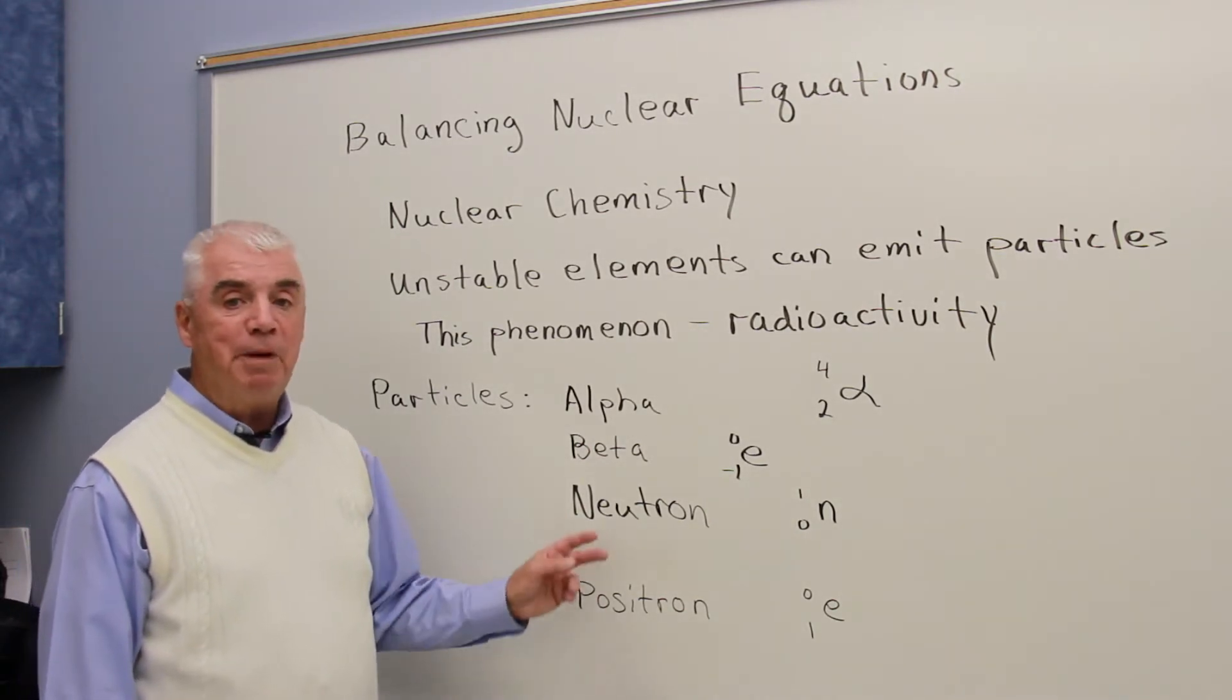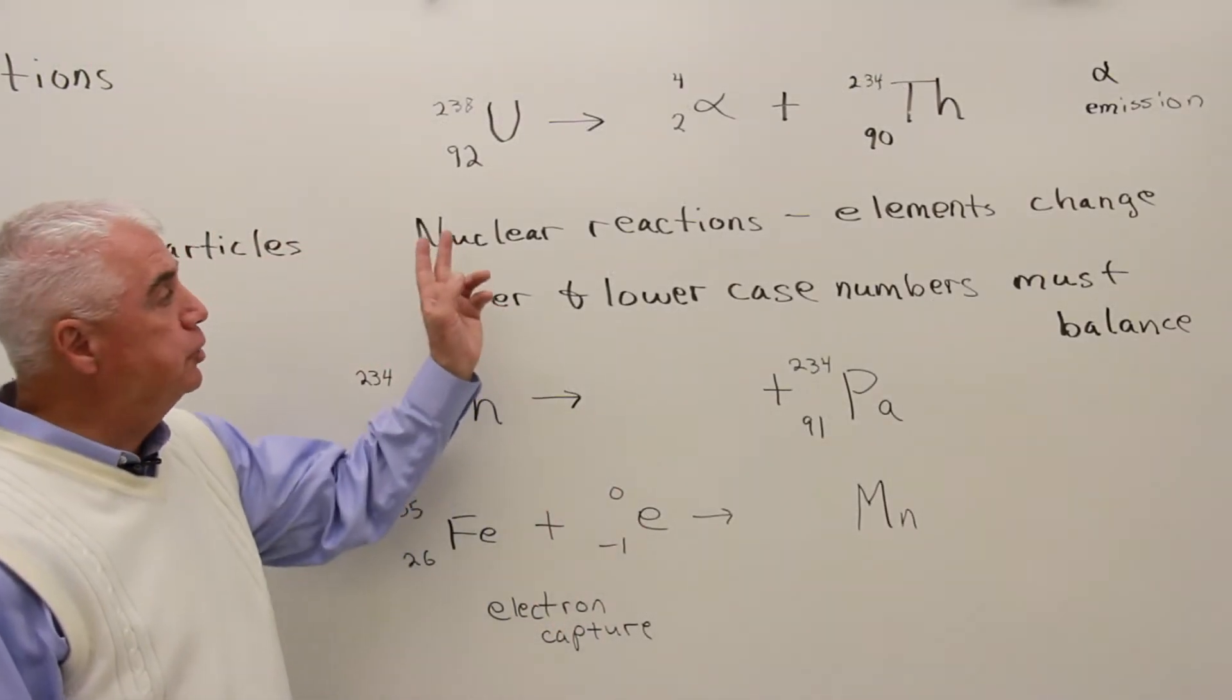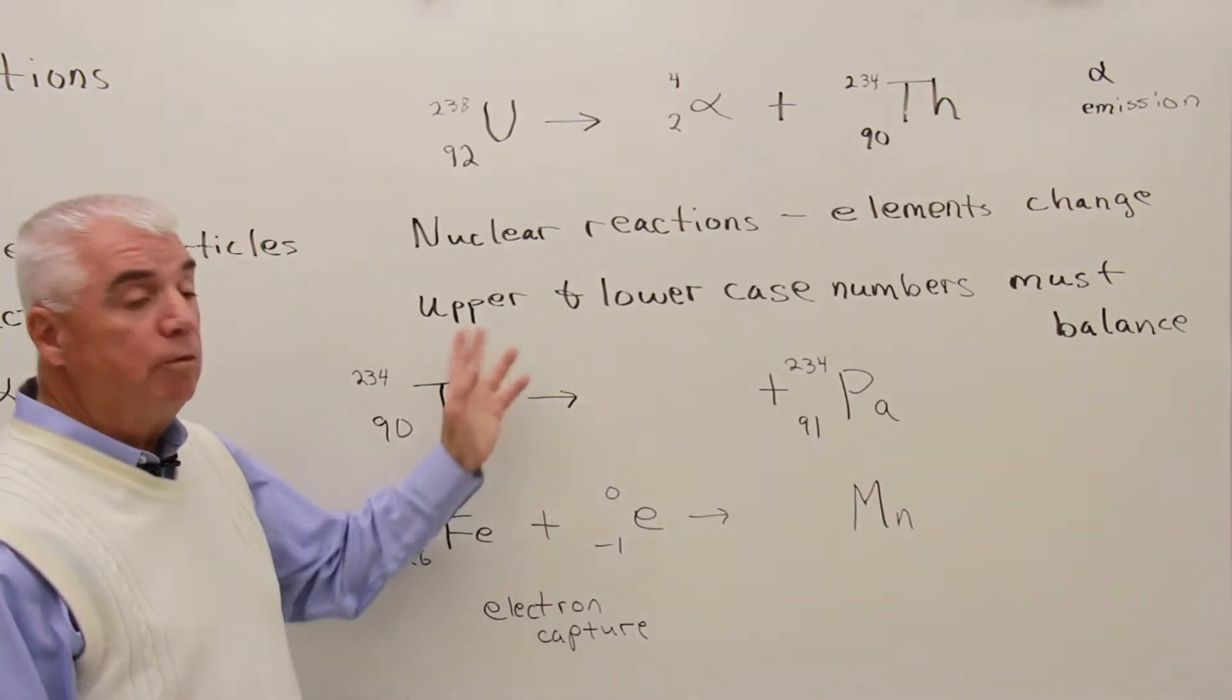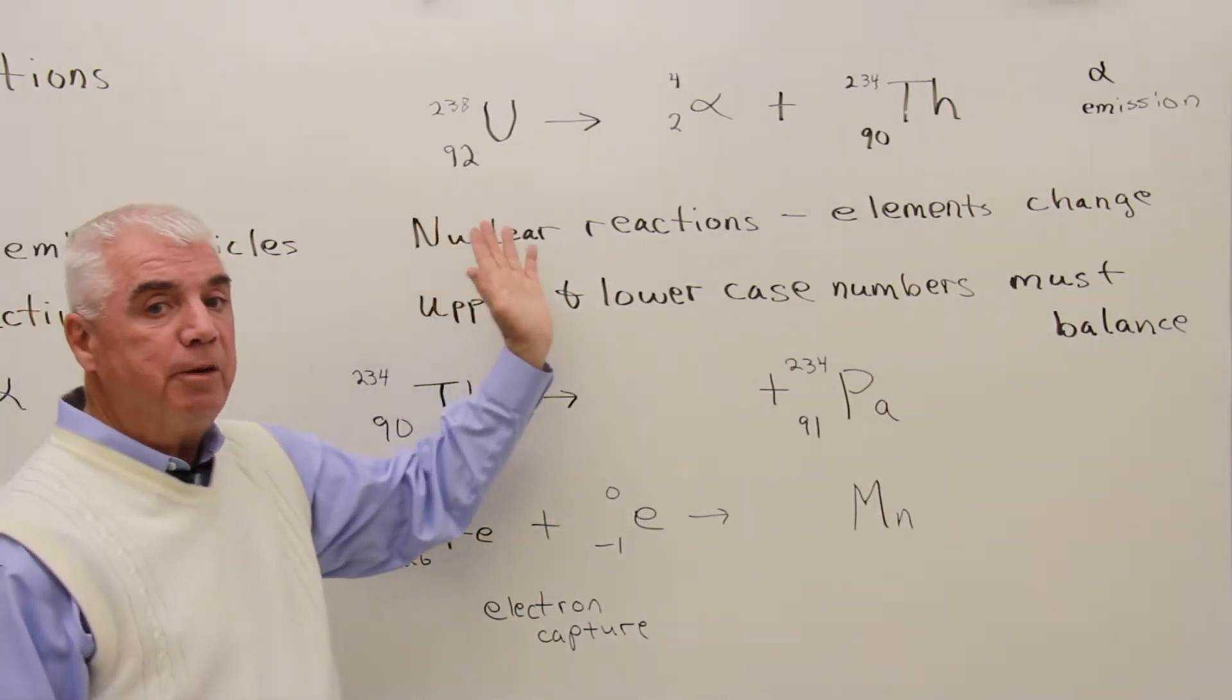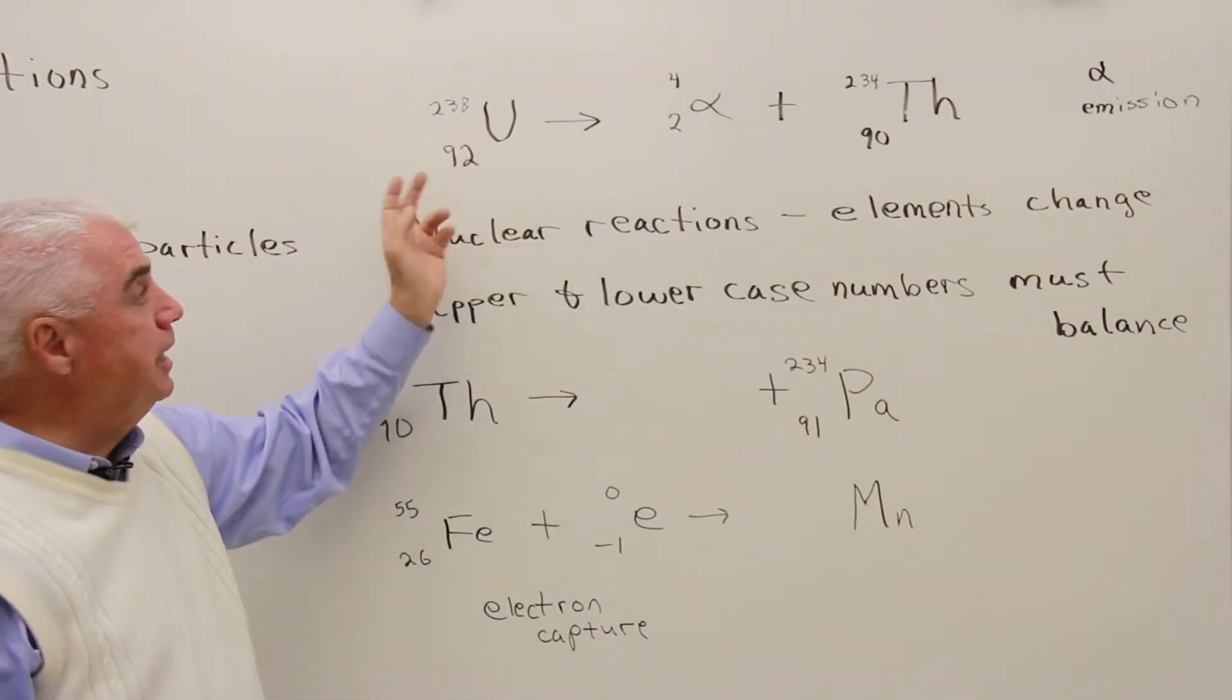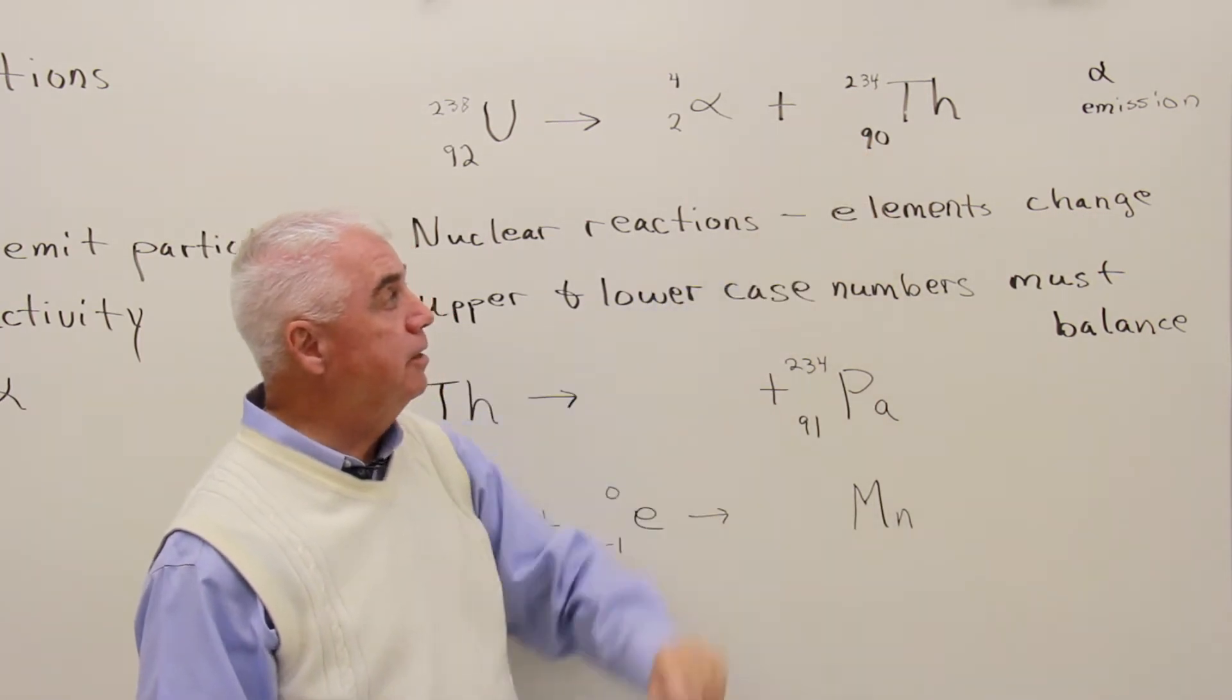Let's look at a typical nuclear equation. In a nuclear reaction, the elements change. That's very different from what we had in ordinary circumstances. When we were balancing an ordinary chemical reaction, if we had calcium on the left, we needed to have calcium on the right. But here we've got uranium, element 92, and it's changing into element 90, thorium.